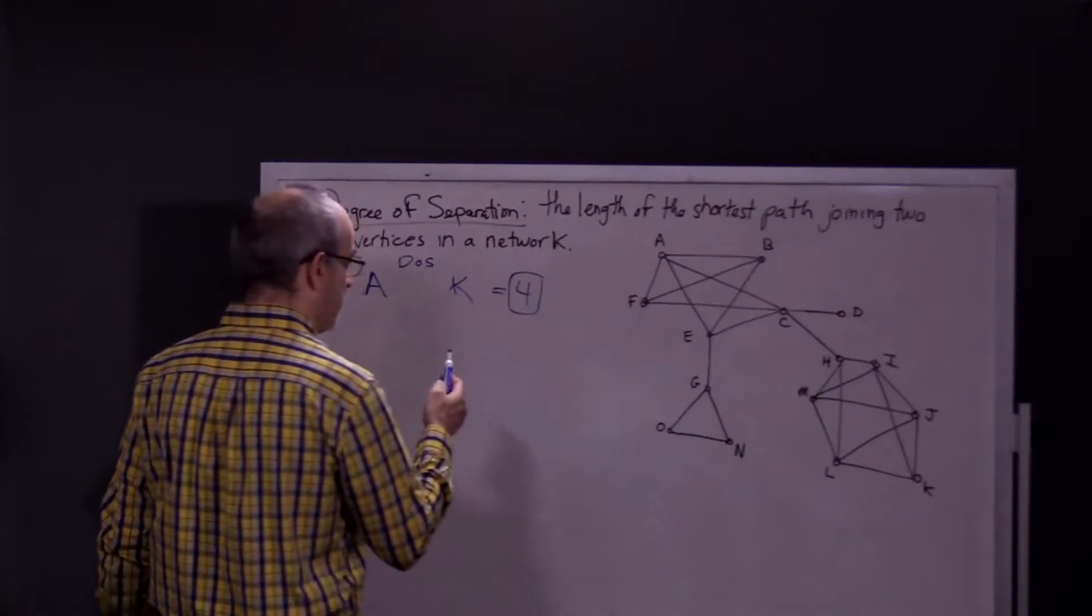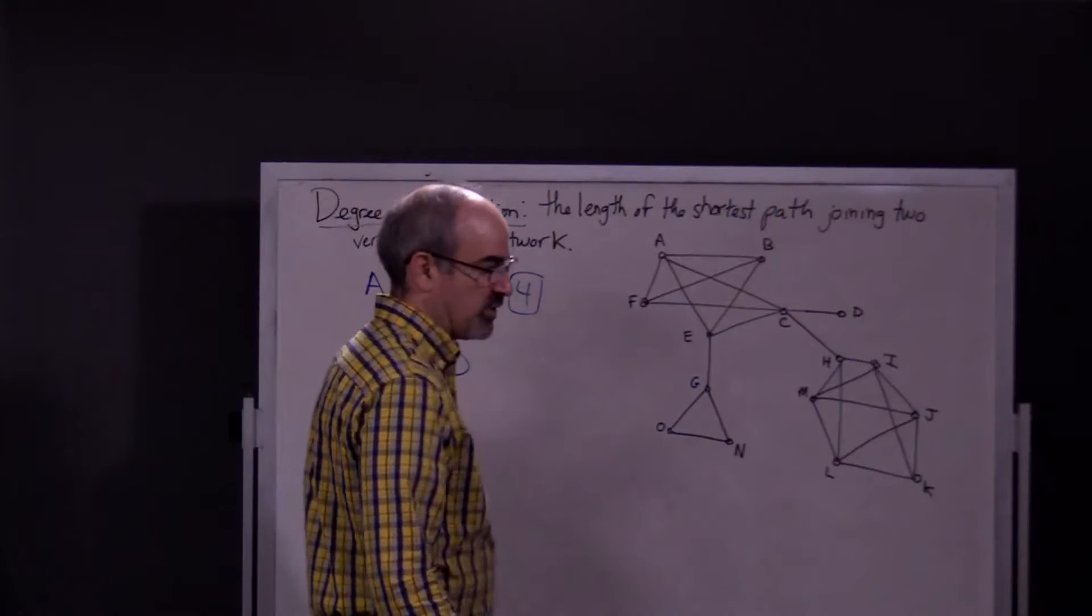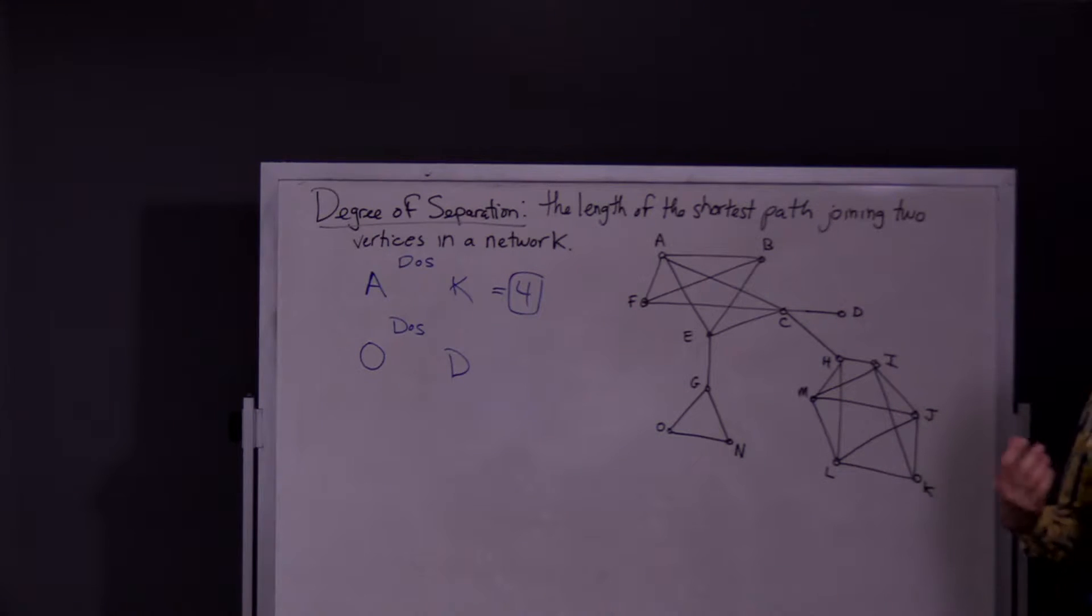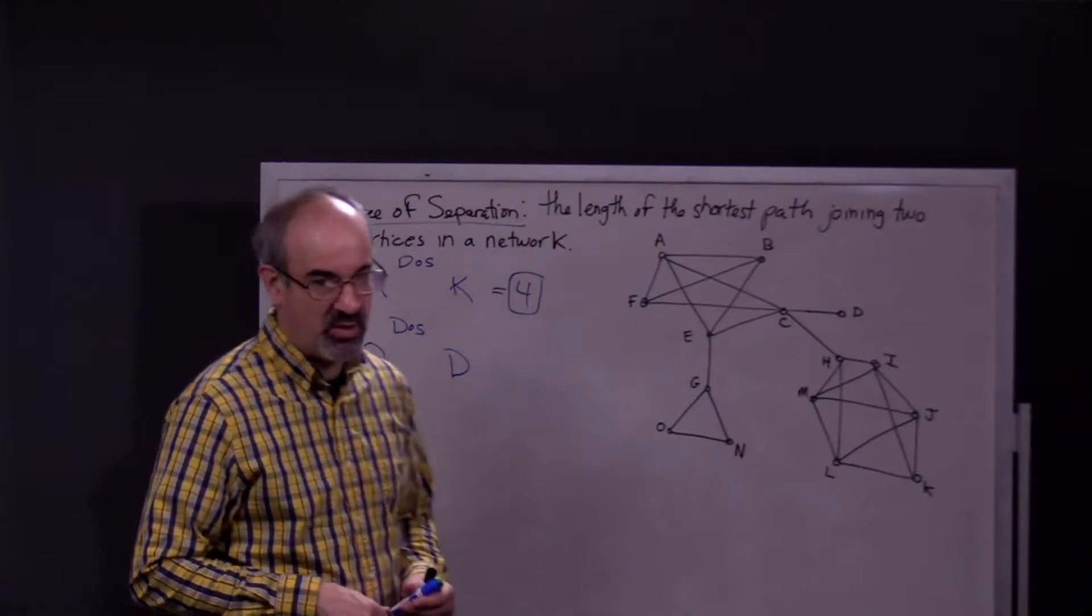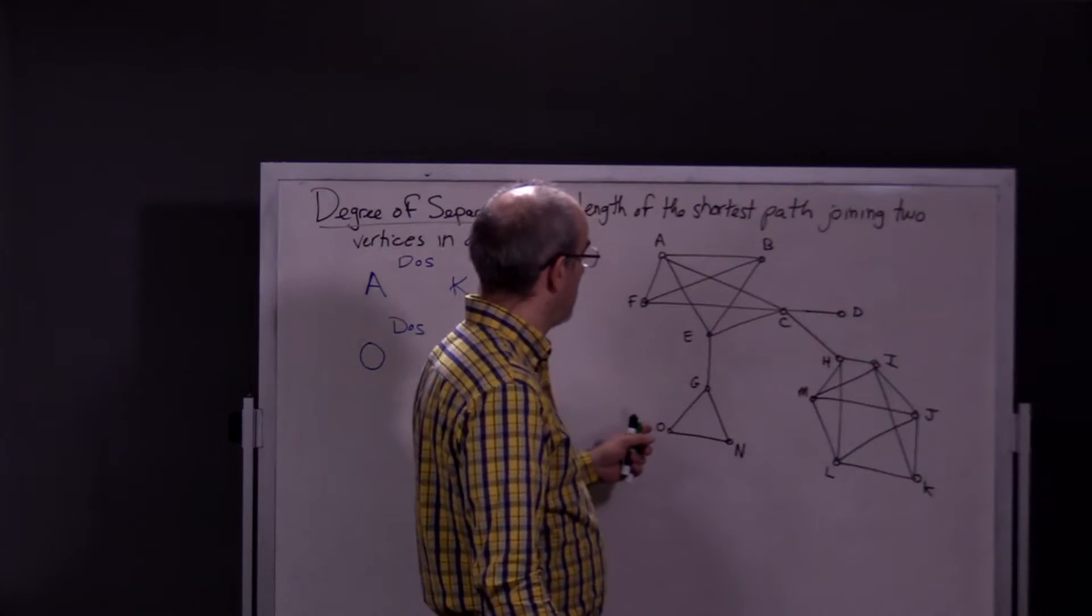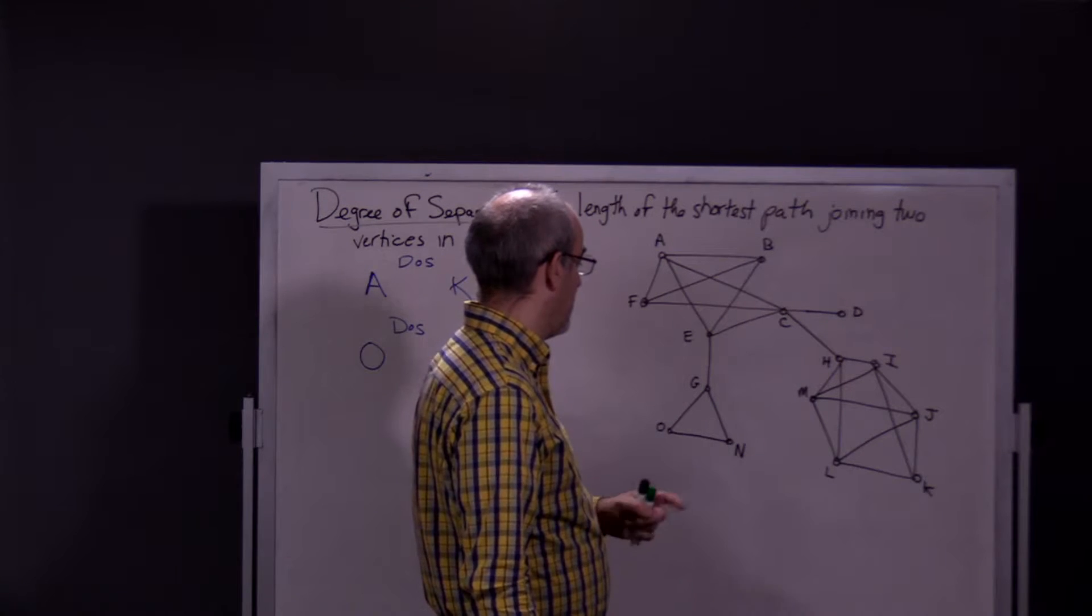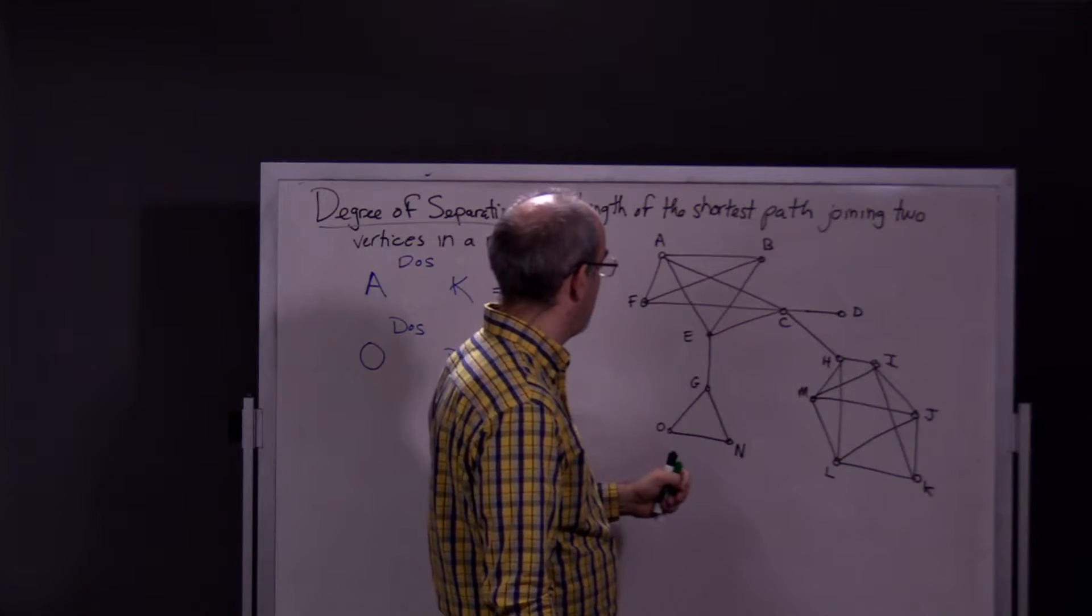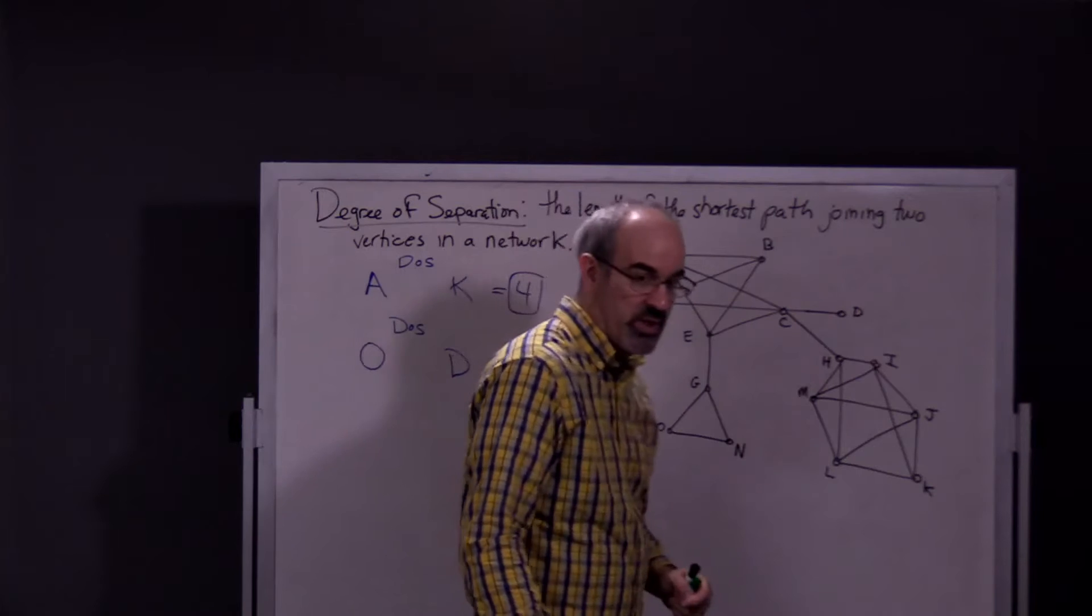Let's just do another one, and then I'm going to do O and D. What is the degree of separation between O and D? Once again, like I said, there's not a formula or a quick answer. You just have to look at the graph and use some sort of method. To get to D, obviously, if you're at O, you're going to have to go through E eventually, right? To get out of this circuit down here, you'd have to go through E eventually. So, the quickest way to E is from O to G to E. So, we have two already.